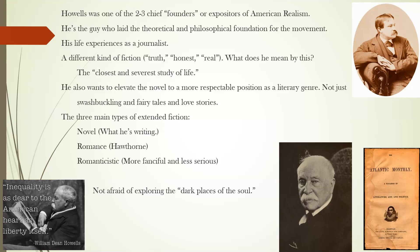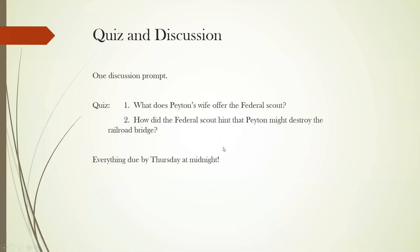For the quiz and discussion: there's one discussion prompt and two quiz questions. One: What does Peyton's wife offer the Federal Scout who comes by? Two: How did the Federal Scout hint that Peyton might destroy the bridge — by what means? Everything is due by Thursday at midnight. Use this week to read a little ahead if you can — I think you'll be glad you did.